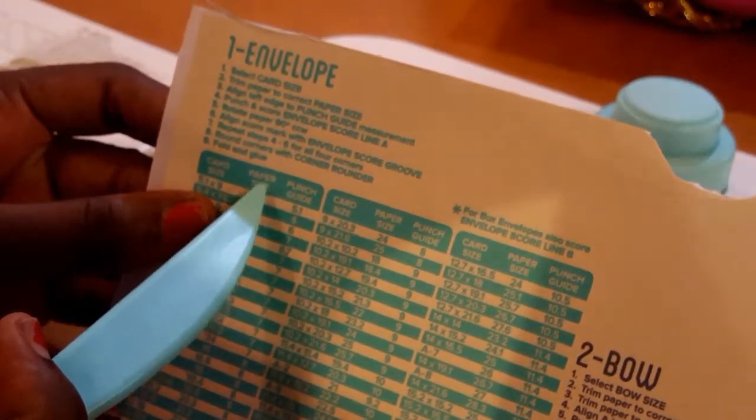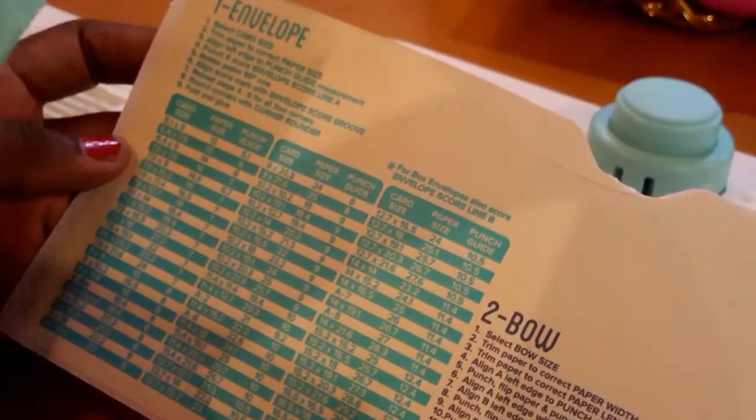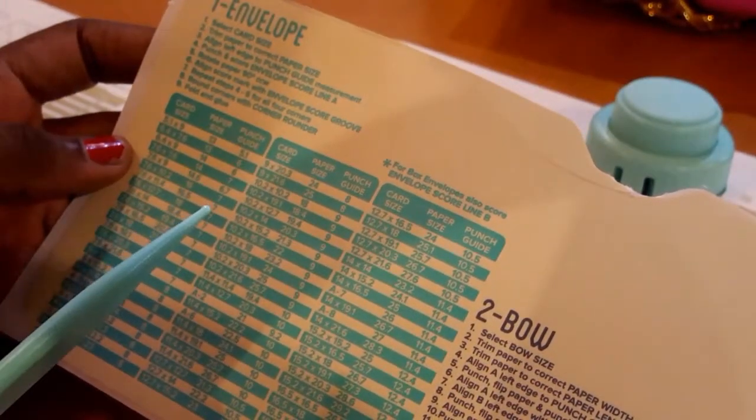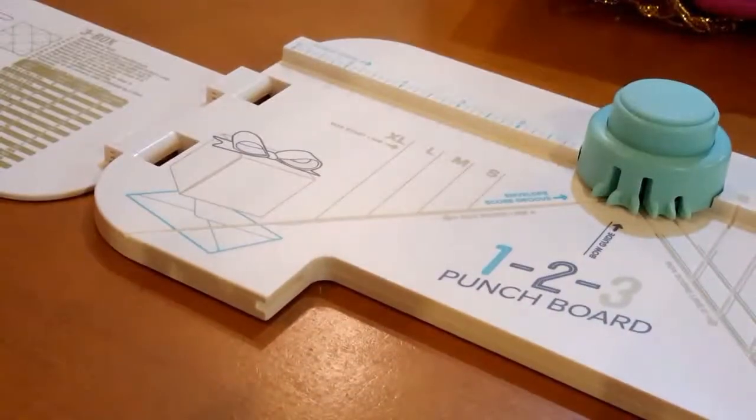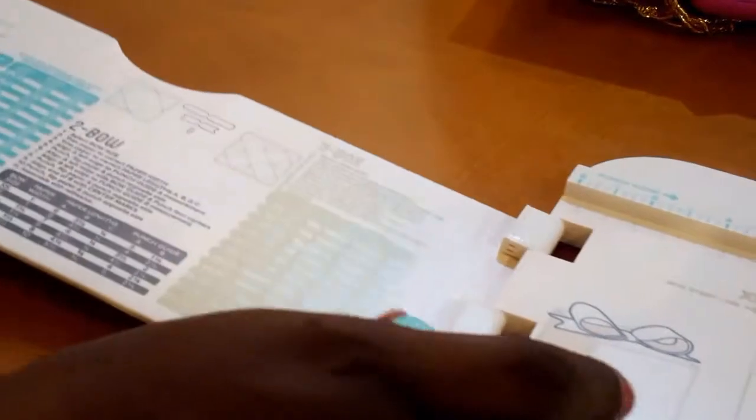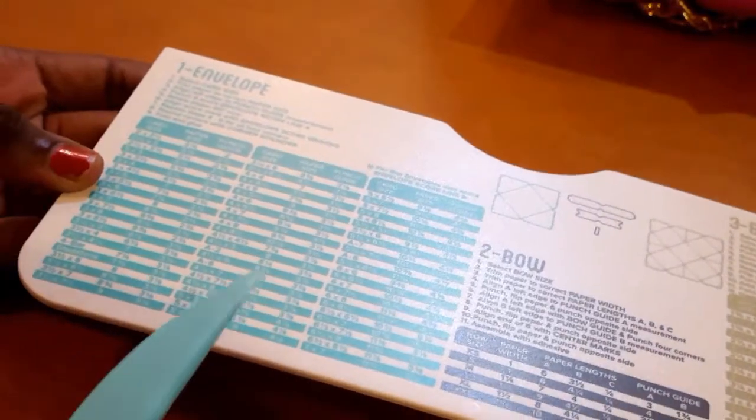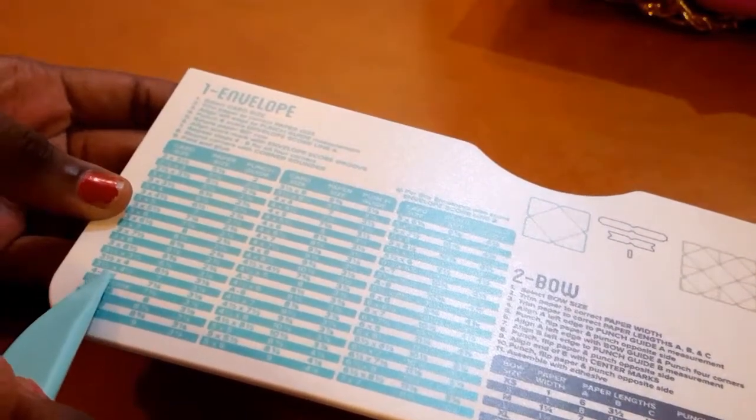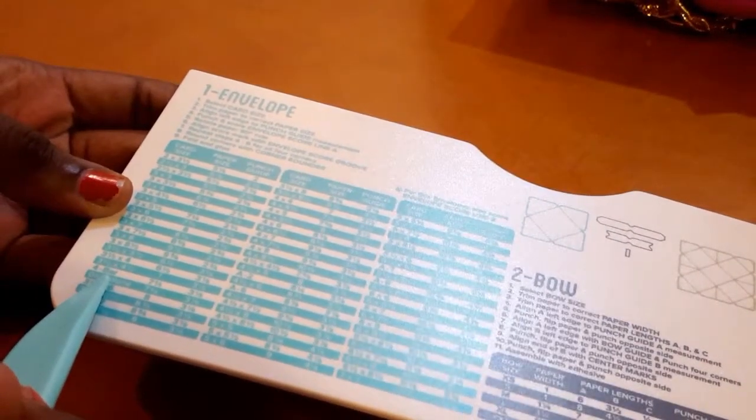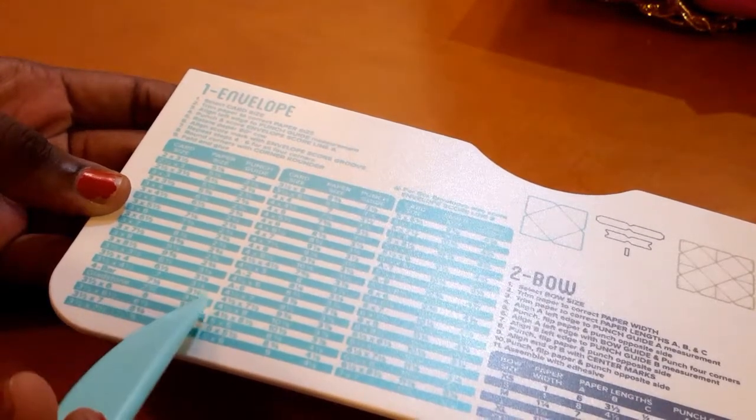We just pull out the part that says 4 bar. So I'm just going to look for the 4 bar and use the information that is there. So for the 4 bar envelope we are going to need a paper size that is 7 and a quarter inches by 7 and a quarter inches and the punch guide measurement is located at 3 and 1 eighths.